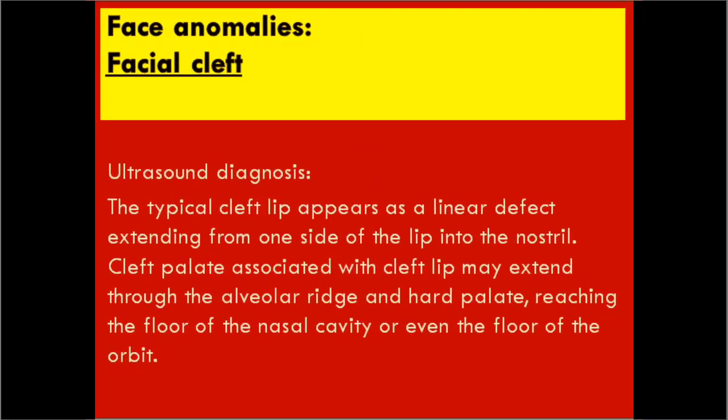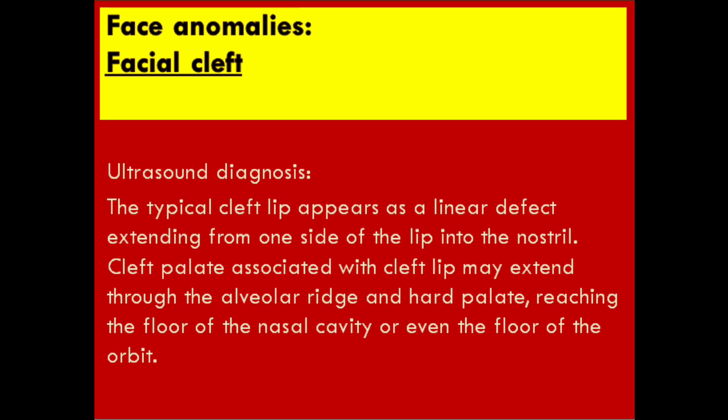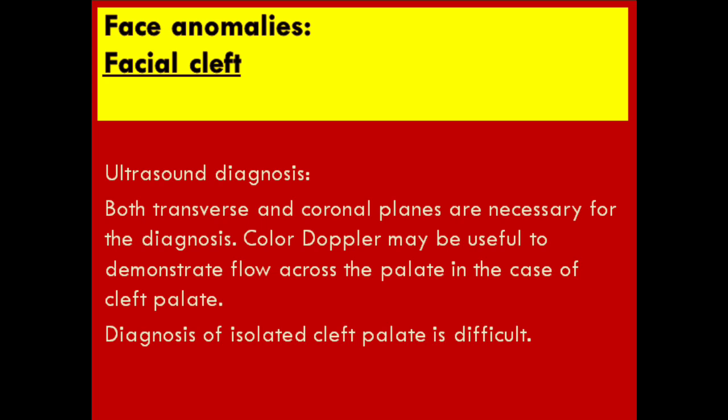The next is facial cleft. Ultrasound diagnosis: the typical cleft lip appears as a linear defect extending from one side of the lip into the nostril. Cleft palate associated with cleft lip may extend through the alveolar ridge and the hard palate, reaching the floor of the nasal cavity or even the floor of the orbit. Both transverse and coronal planes are necessary for the diagnosis. Color Doppler may be useful to demonstrate flow across the palate in the case of cleft palate. Diagnosis of isolated cleft palate is difficult.